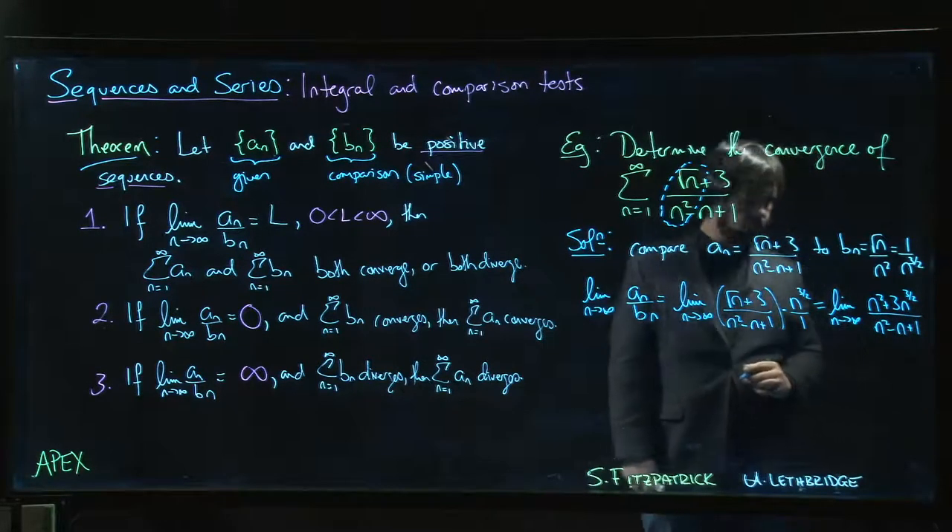So if we multiply that through, we get the limit as n goes to infinity of n to the 3/2 plus 3n to the 3 over 2 divided by n squared minus n plus 1. And that limit is 1.